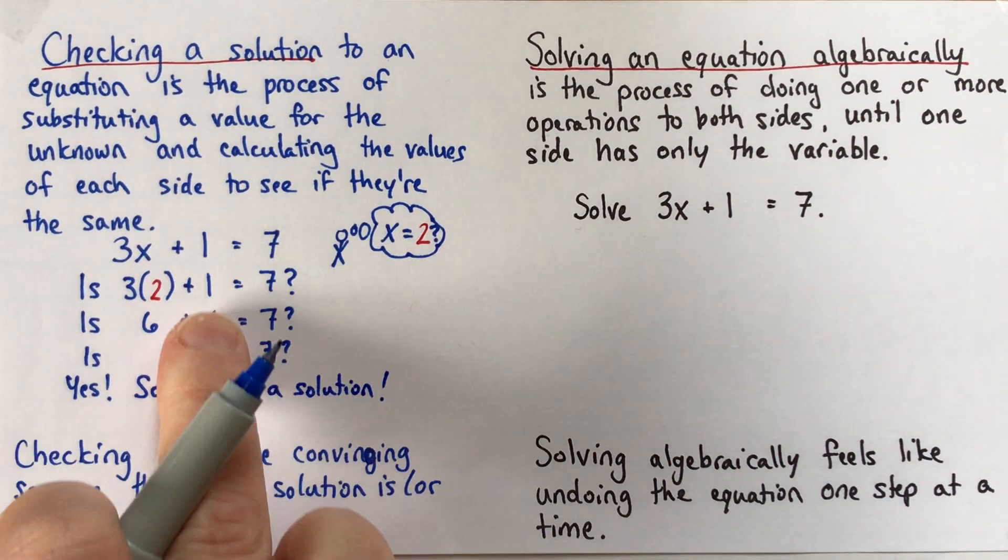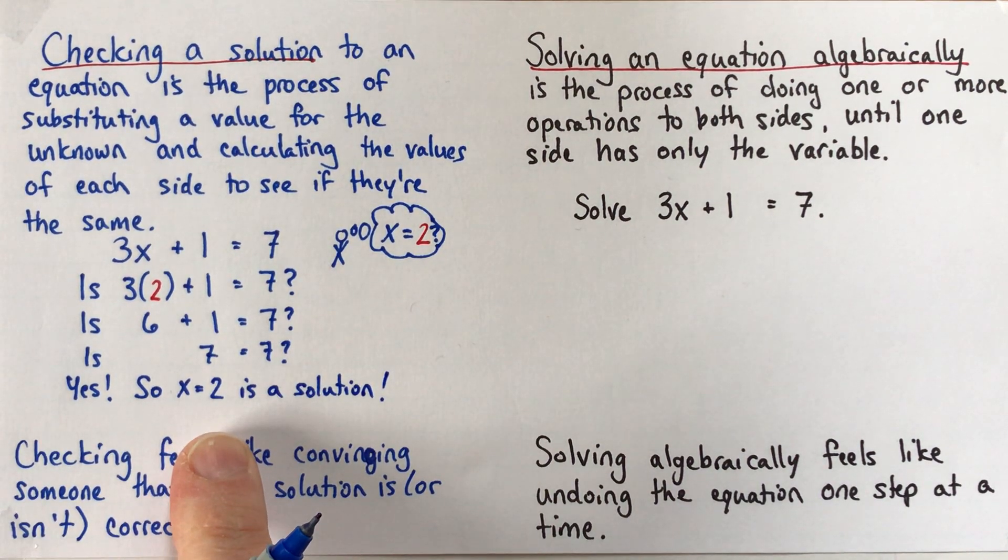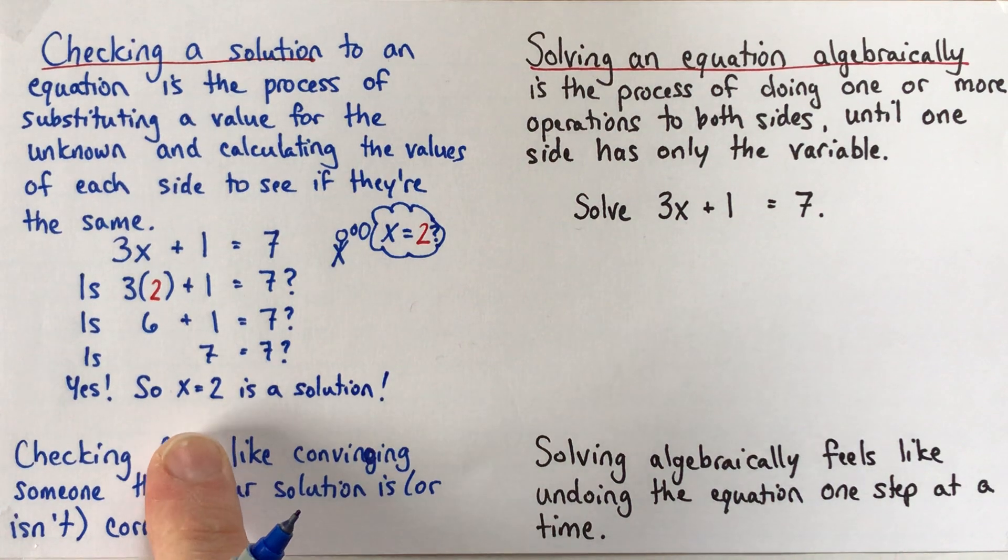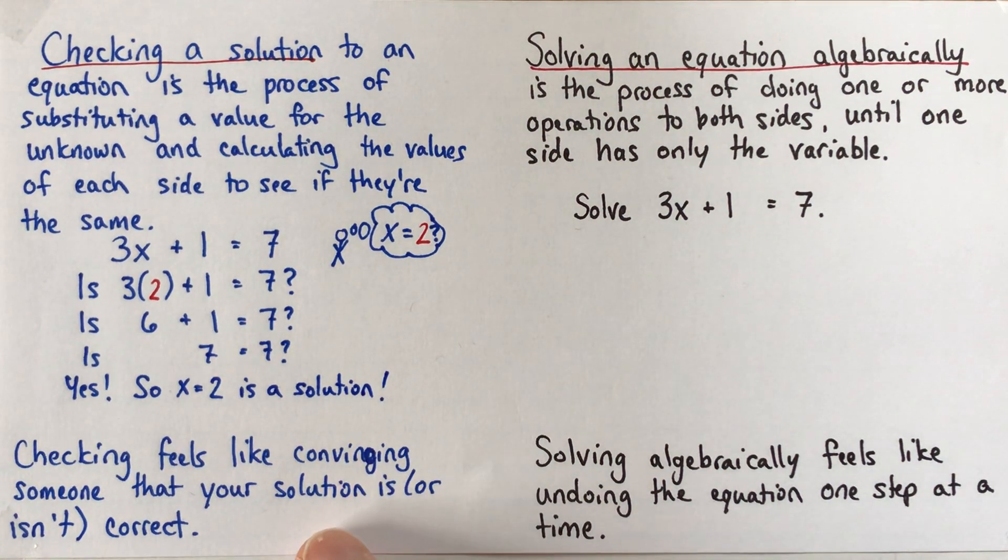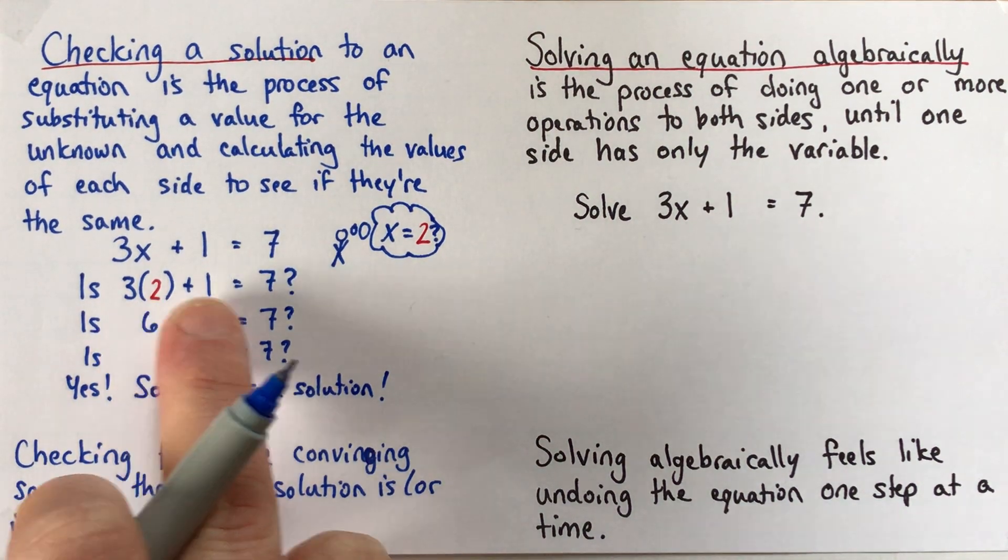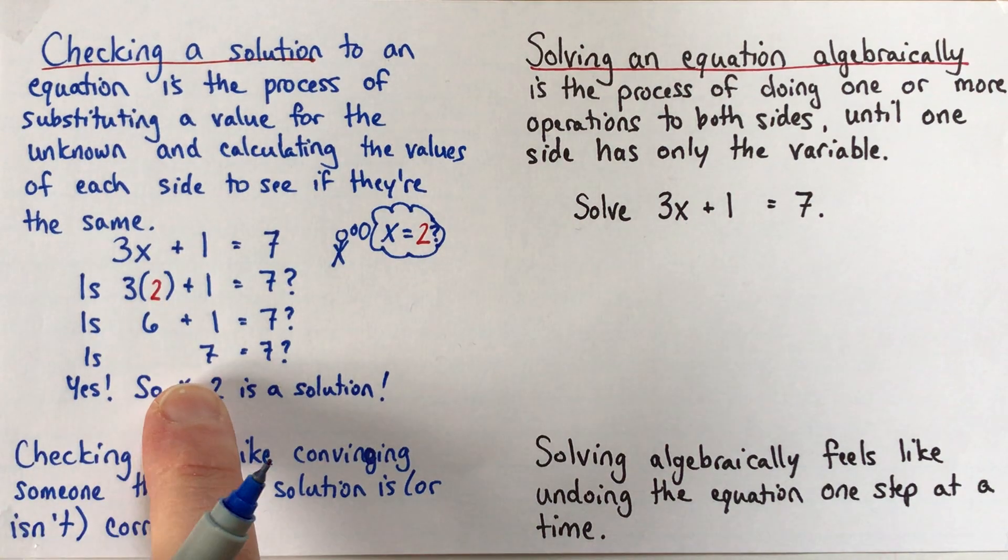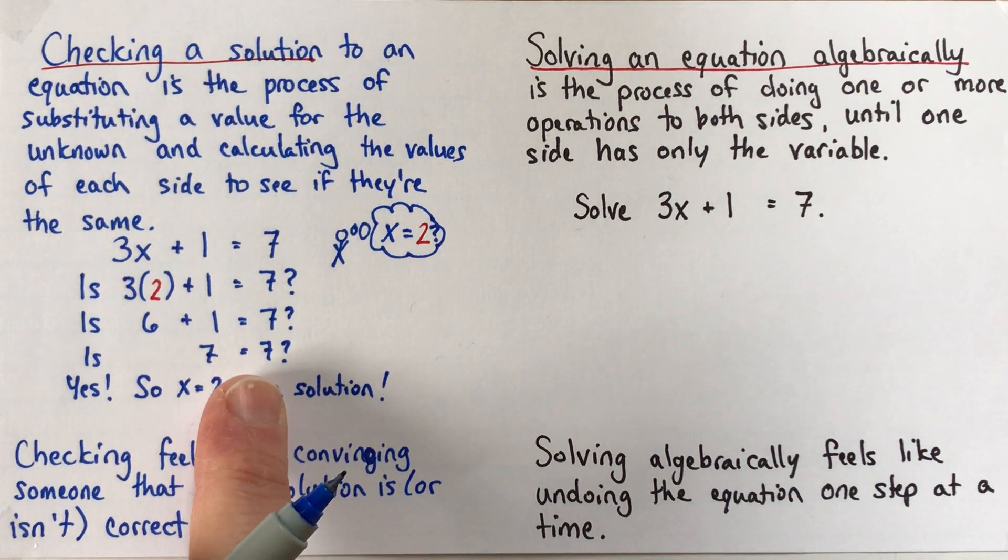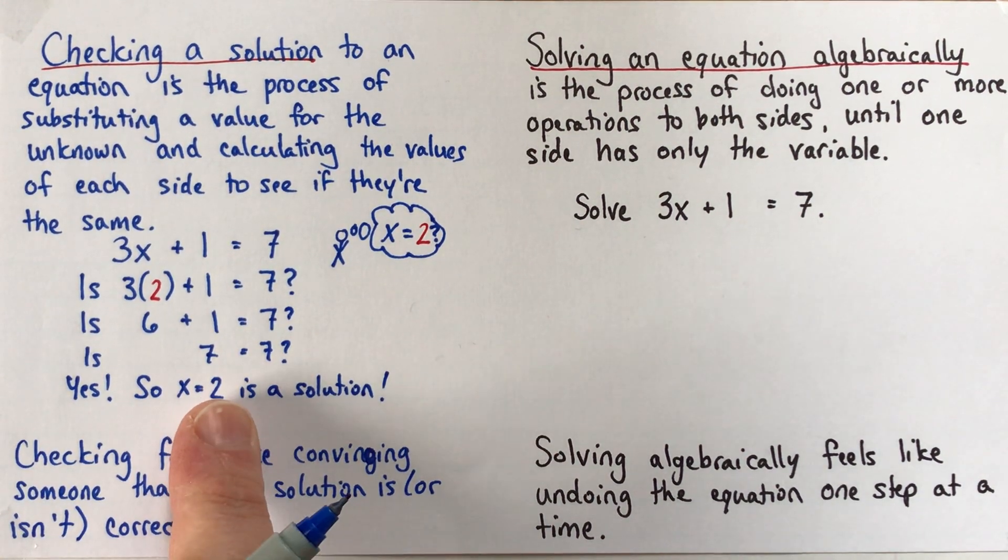Alright, so this is a very lovely check. And what checking feels like is it feels like you're trying to convince someone that your solution is correct, or, alternately, that your solution is not correct. So see here, we've substituted x equals 2, and look, we showed carefully with all the details that the two sides are the same, or they're equal. Alright?